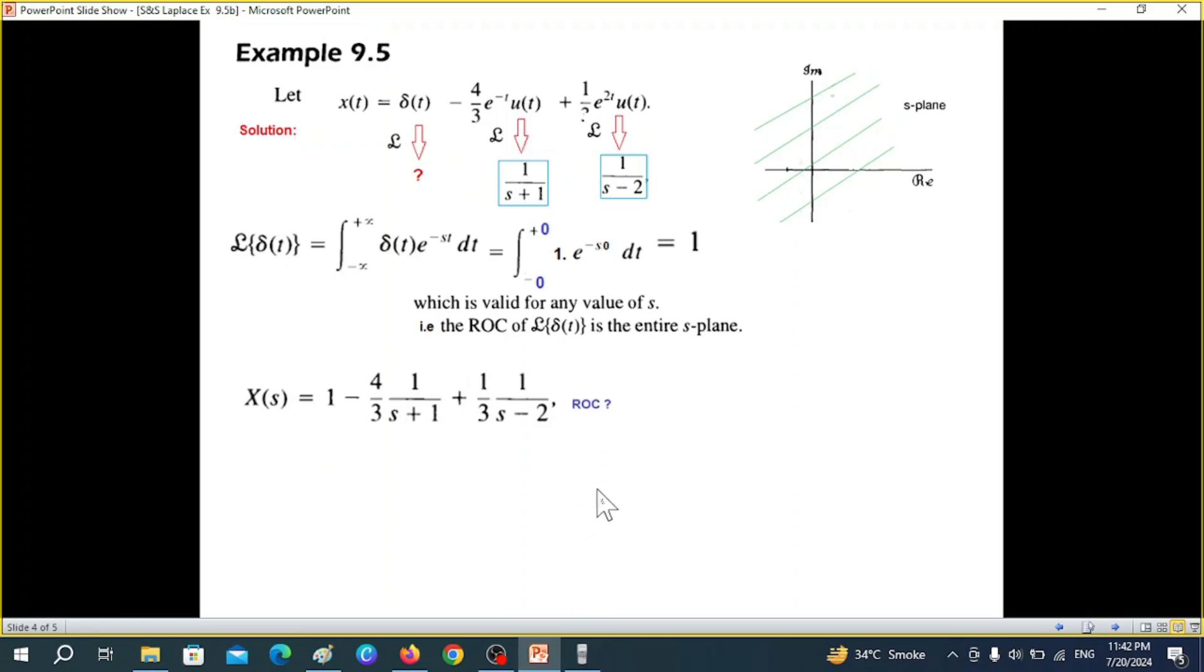Now what about ROC? First of all we have known this one is over the entire plane. We have also learned earlier that s plus one is equal to zero means s equal to minus one. That means, and because it is the right sided function ut, so this will be ROC will be greater than minus one.